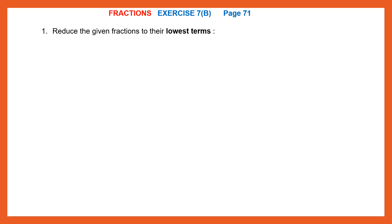Question 1: Reduce the given fractions to their lowest terms. The first question given to us is 8 by 10. When we have to reduce fractions to the lowest term, we have to divide the numerator and the denominator by a common factor — a number that can divide both these numbers, 8 and 10. So 2 can divide 8 and 10. 2 fours are 8 and 2 fives are 10, so we get the fraction 4 by 5, which cannot be reduced further. This is the lowest term. We have simplified 8 by 10 to 4 by 5.